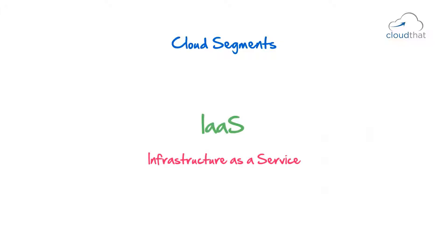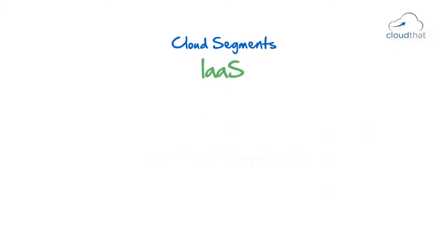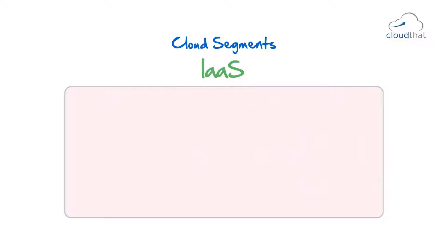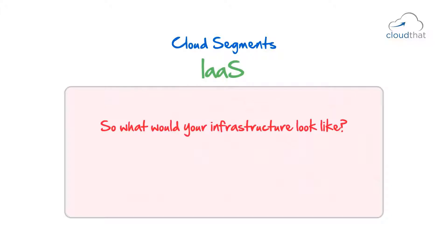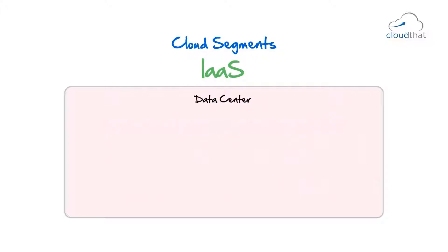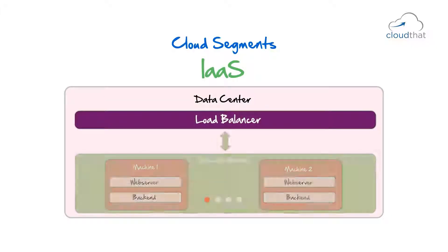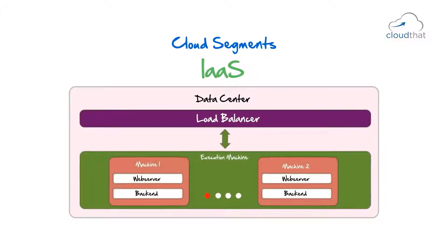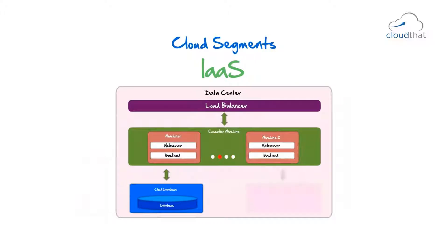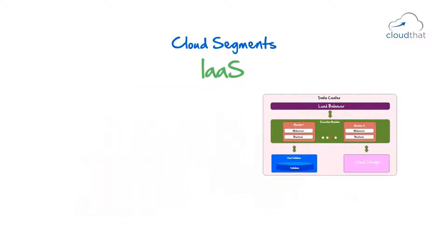IaaS — Infrastructure as a Service. Let's say you're designing infrastructure for an e-commerce site. Your infrastructure would include a data center, a load balancer, some servers running the code, a database, some storage where product images are stored, etc. In Infrastructure as a Service, you are selecting and handpicking each of these components.